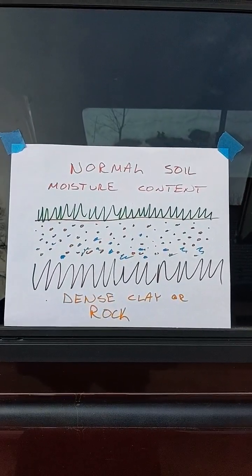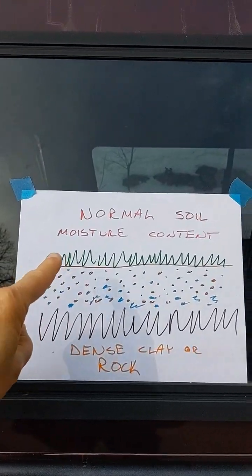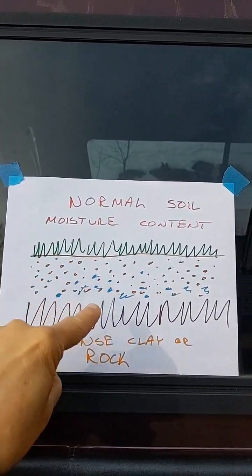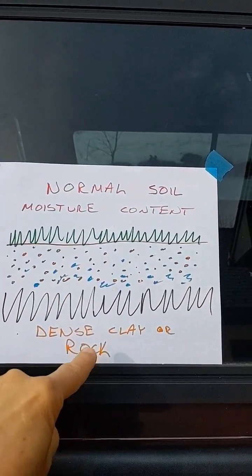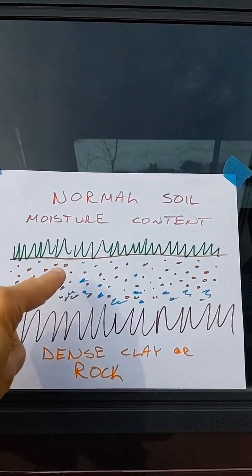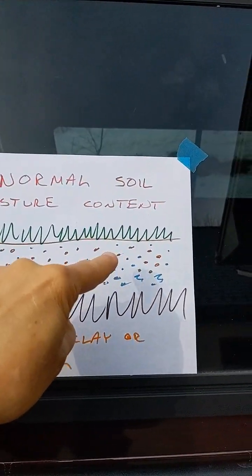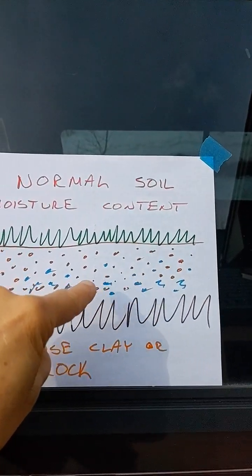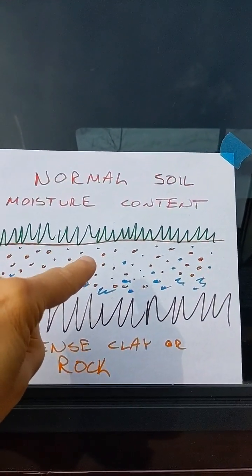Welcome to my outdoor classroom. Here's what normal soil is like. This is grass. This is the topsoil. This is where the soil gets a little denser and finally dense clay or rock. In the regular topsoil, you've got all of this air — that's this white space — and you have some moisture in that air space. Think of a sponge that has got some water in it.